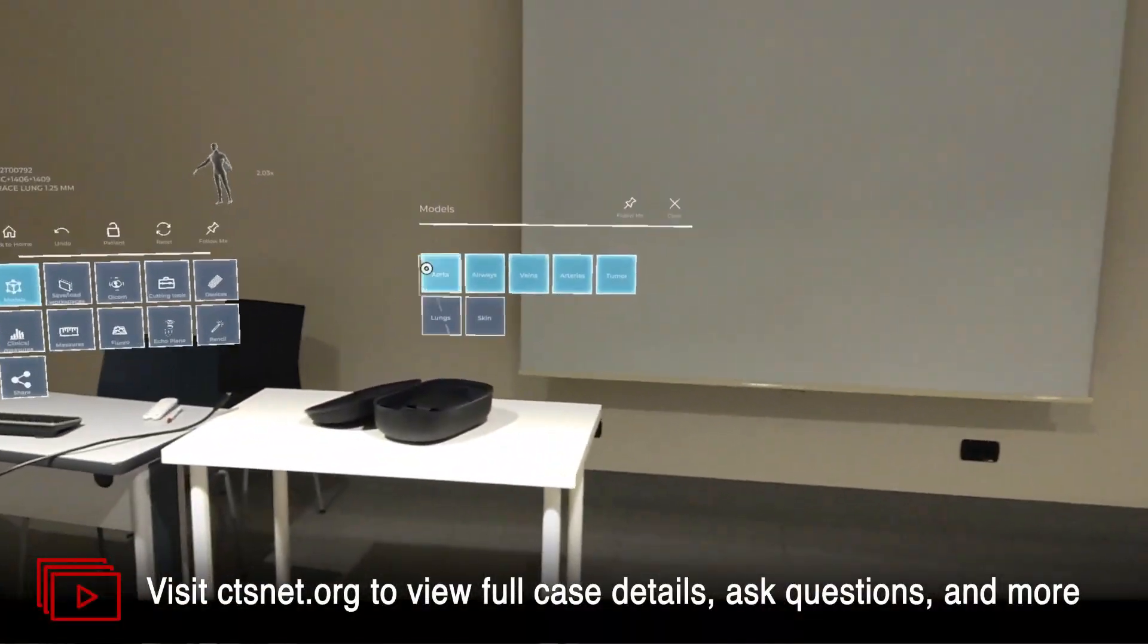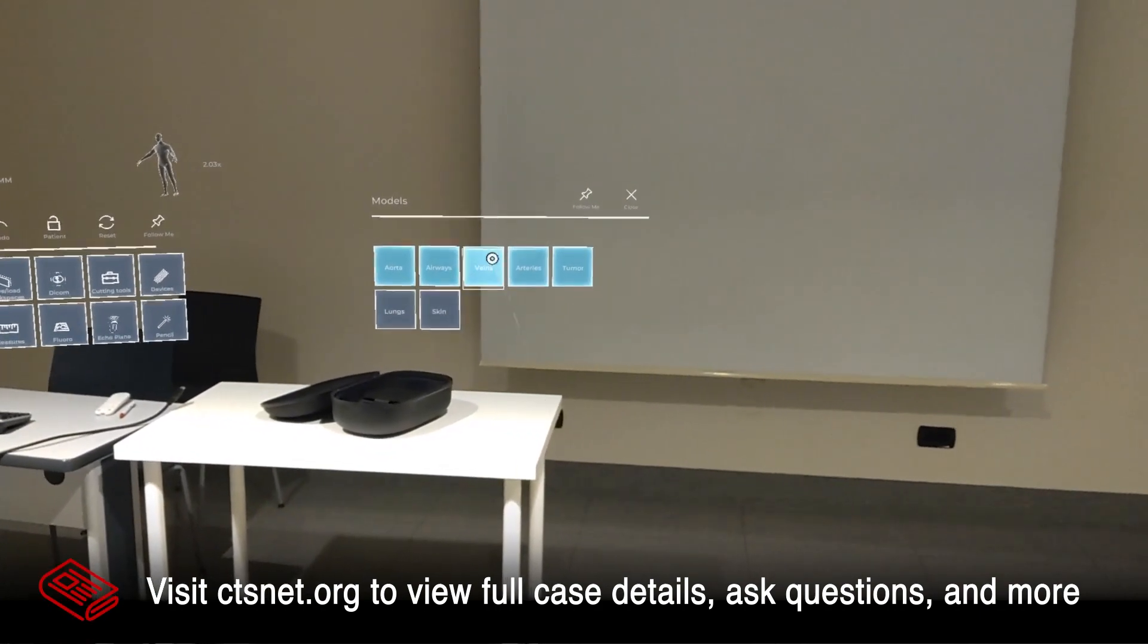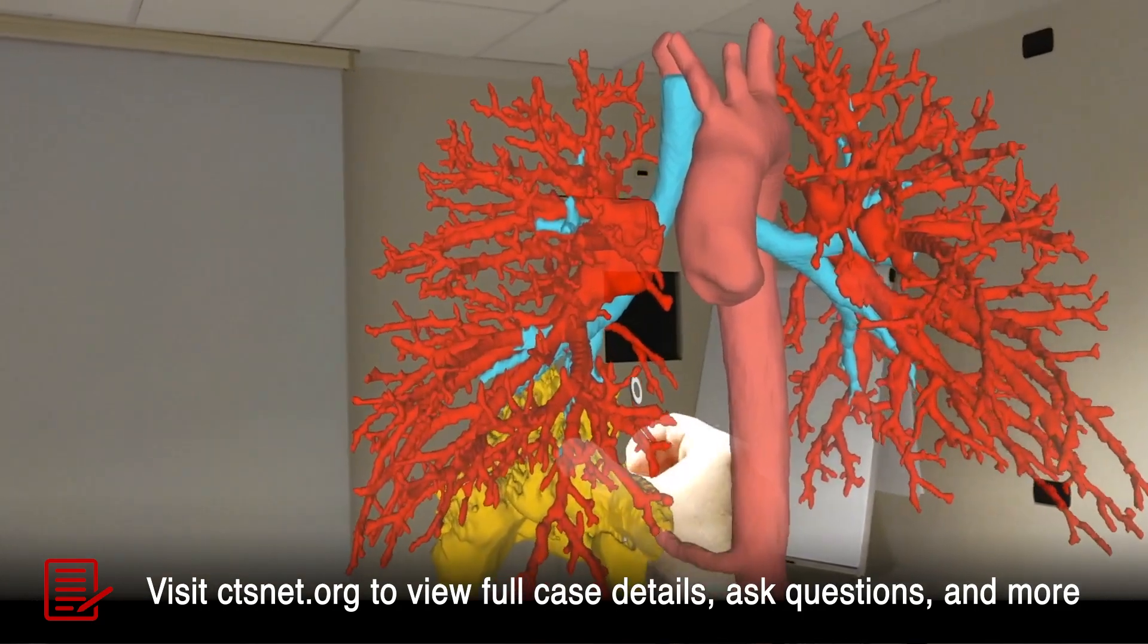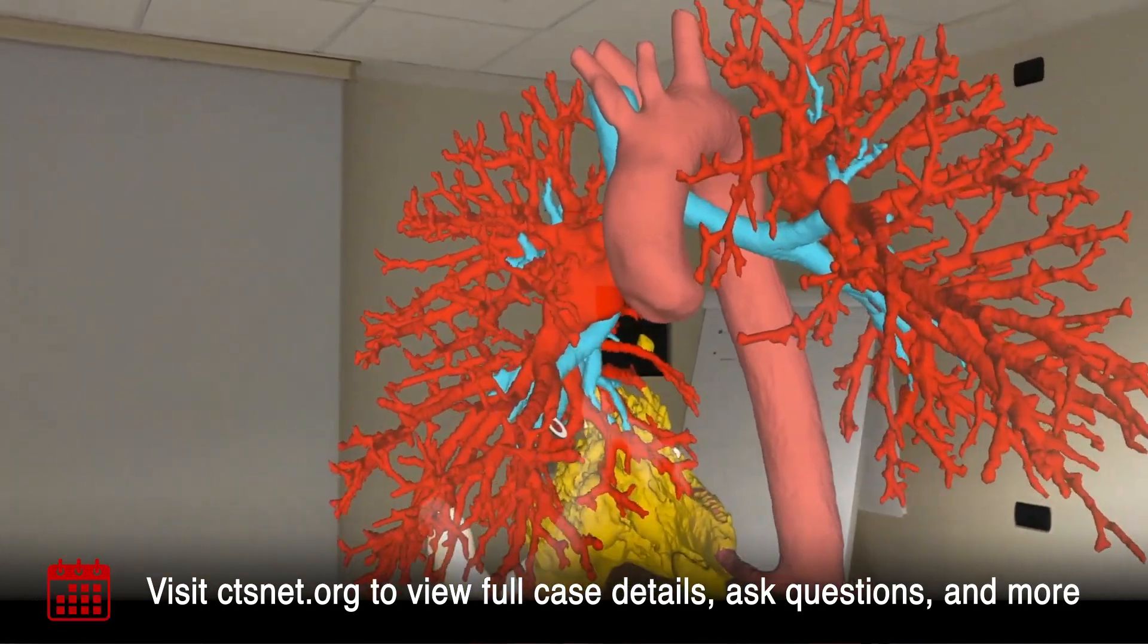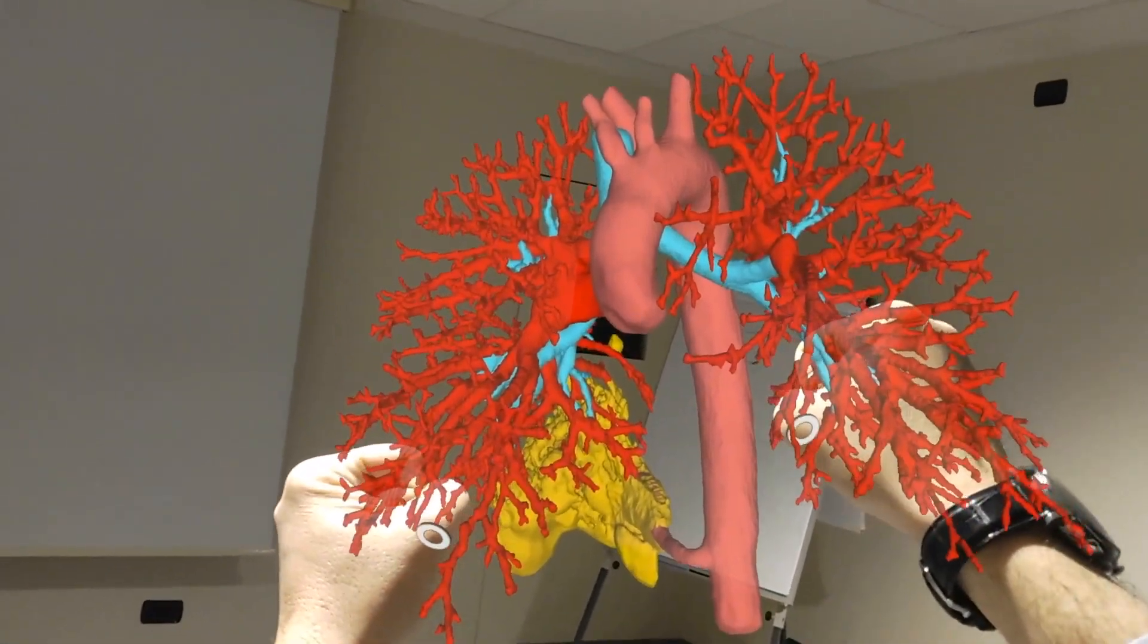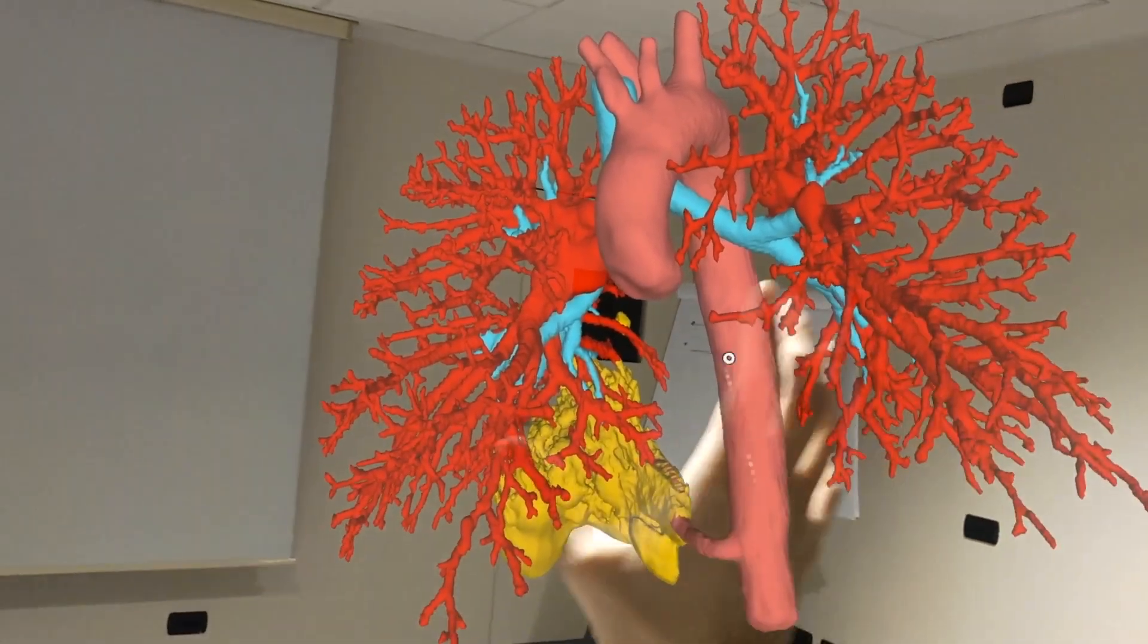Chest computed tomography and holographic reconstruction disclosed a transdiaphragmatic feeding artery from the abdominal aorta entering the pulmonary lesion, thus suggesting an intralobar pulmonary sequestration.